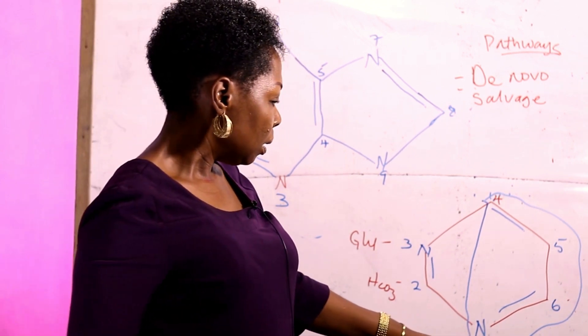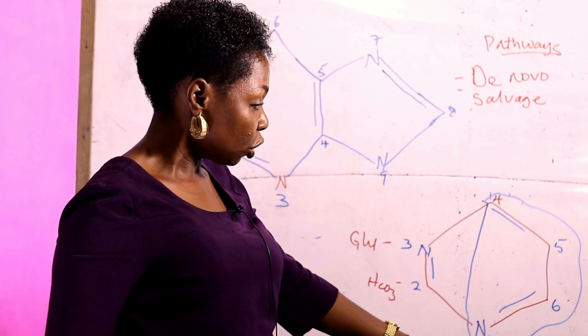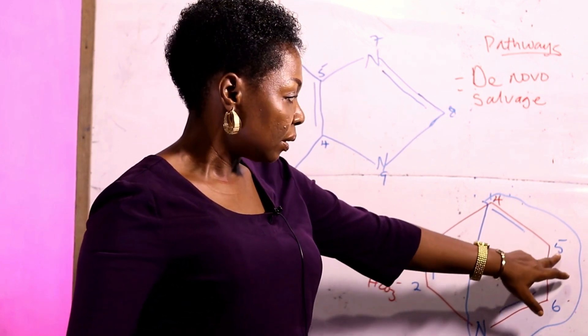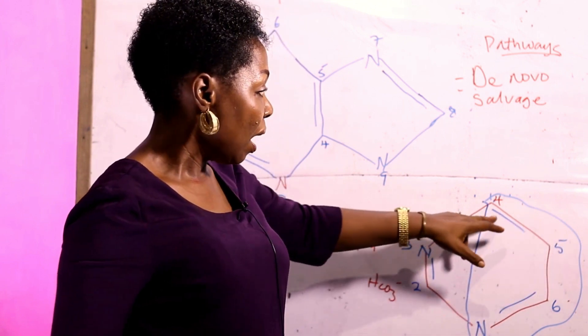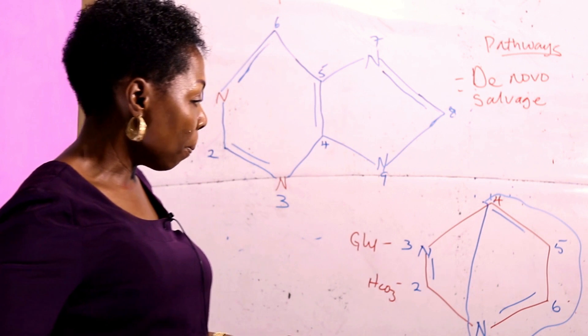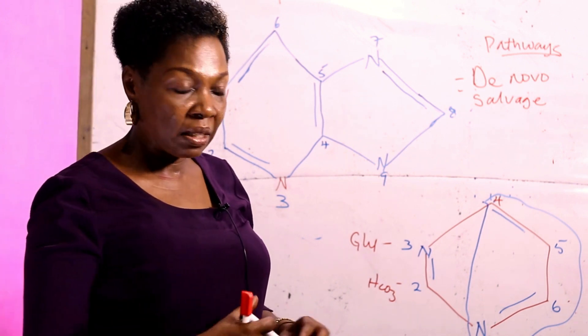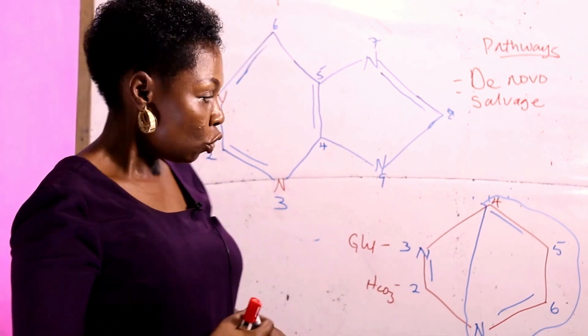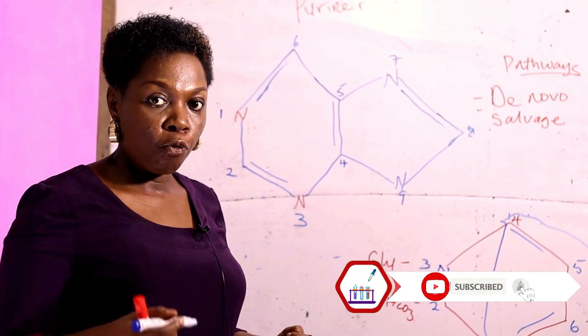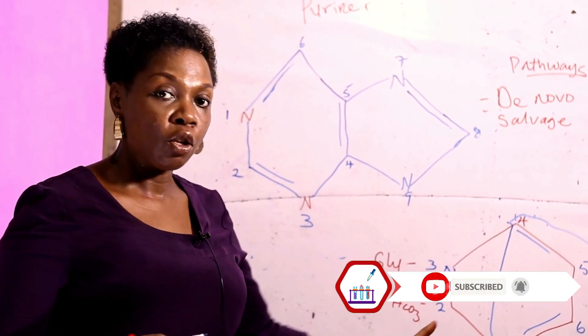while the nitrogen at position 1 and carbon at position 6 and carbon at position 5 and position 4 is supplied by the amino acid aspartate. So we will say the sources of molecules for the synthesis of the pyrimidine